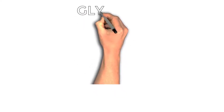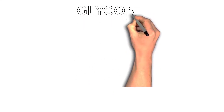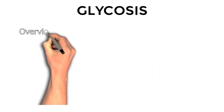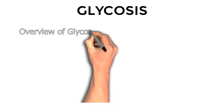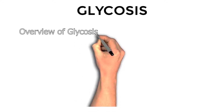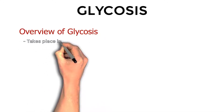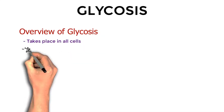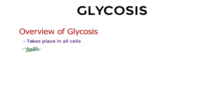Hello guys, today we will discuss glycolysis. Glyco means glucose and lysis means its breakdown. Let's look at the overview of glycolysis. As we know, glycolysis takes place in all the cells and its location is inside the cytoplasm.